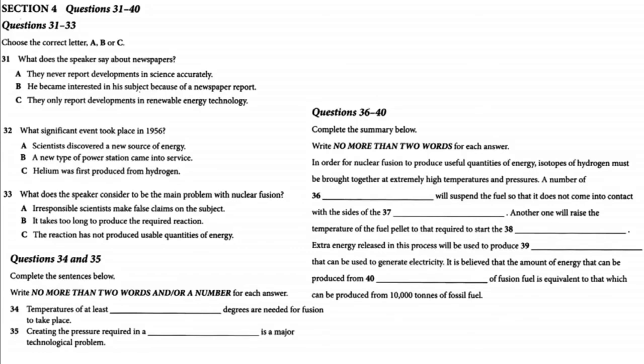To give you some idea of how much energy we can produce, it has been calculated that just one kilogram of fusion fuel is capable of producing the same amount of energy as 10,000 tons of fossil fuel. I think you would agree that such an objective is worth working towards. I believe, and I am not alone in this, that nuclear fusion could supply the world's energy needs for centuries to come. That is the end of Section 4. You now have half a minute to check your answers.